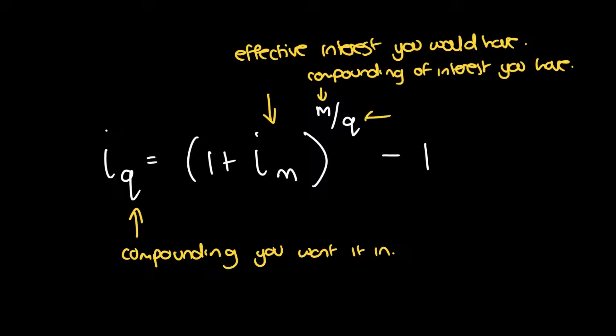Then you have Q, which is the compounding period you want to convert into. So if you're taking it from months to quarters, then Q would be 4.